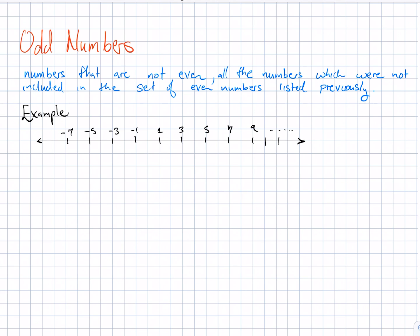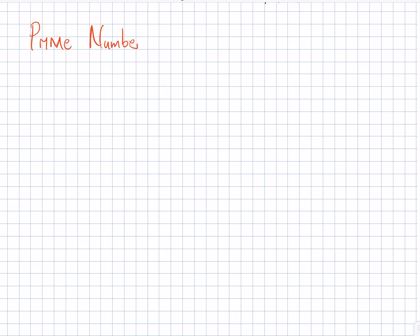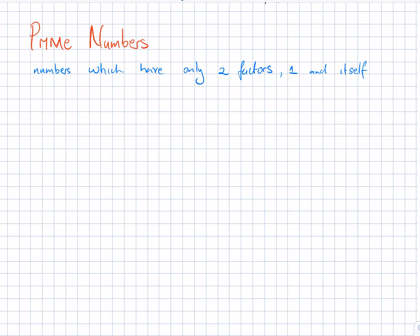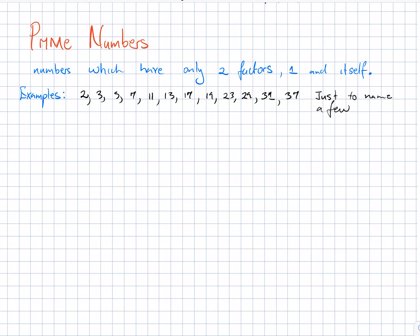Another unique set of numbers that comes up a lot in mathematics are the prime numbers. These are numbers which have only two factors: one and itself. Examples include 2, 3, 5, 7, 11, 13, 17, 19, 23, 29, 31, 37, just to name a few. Note that 1 is not a prime number, and negative numbers are not prime either.